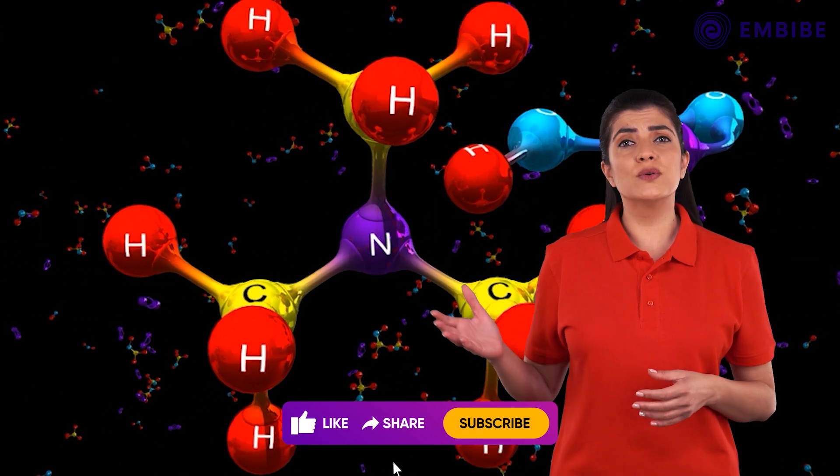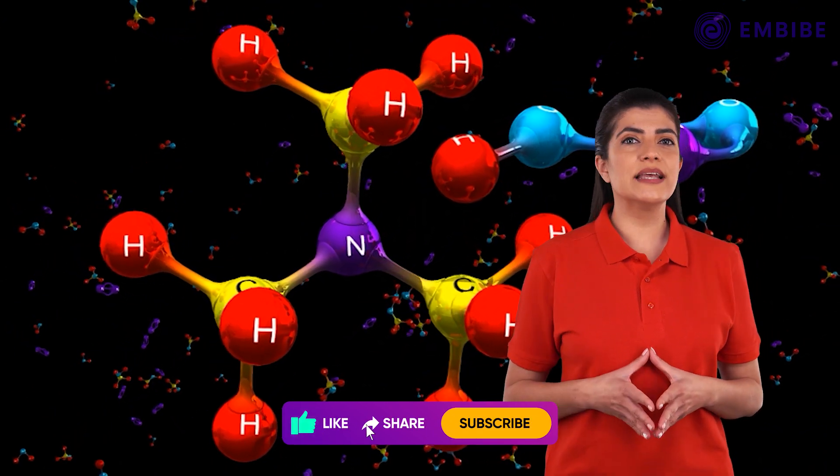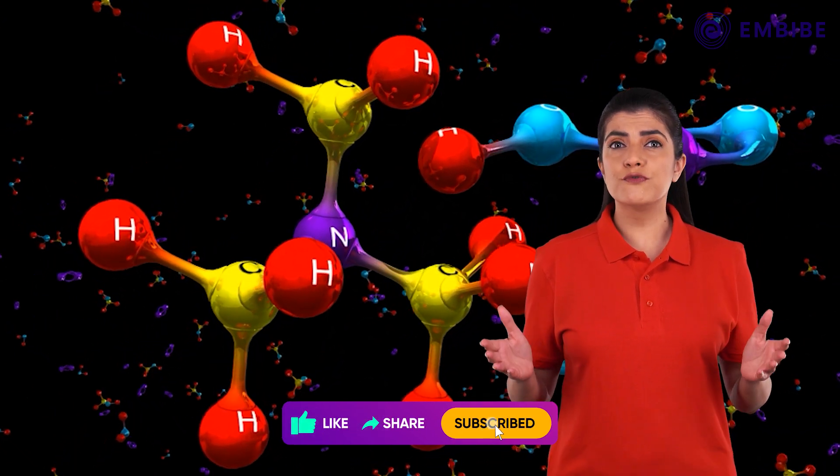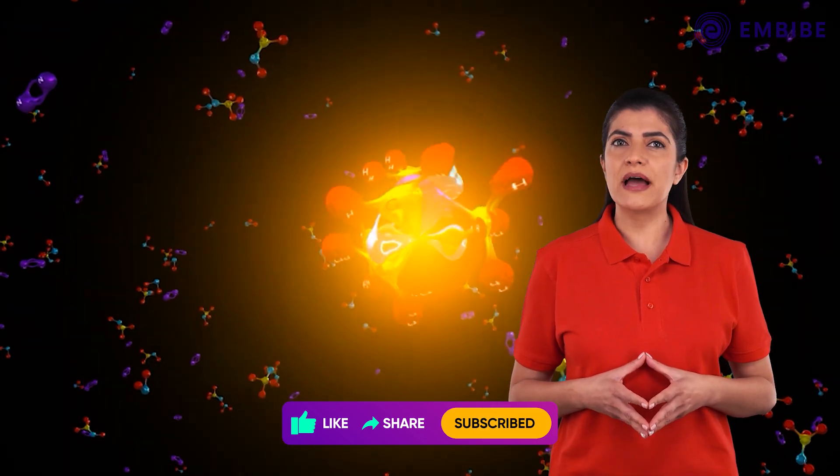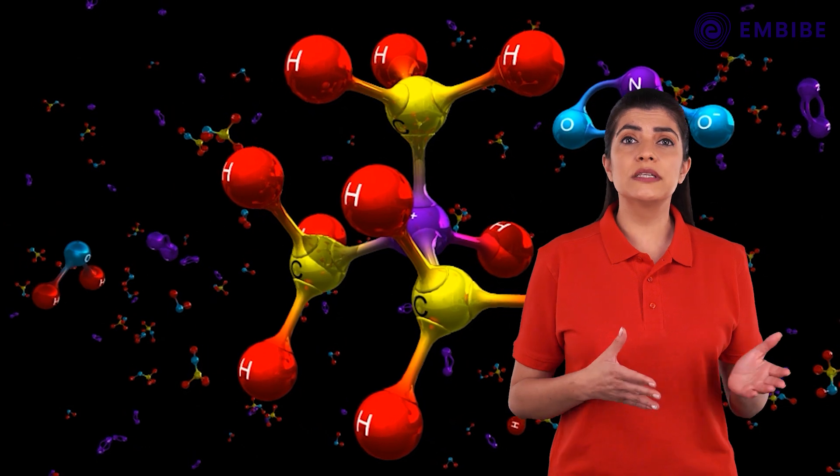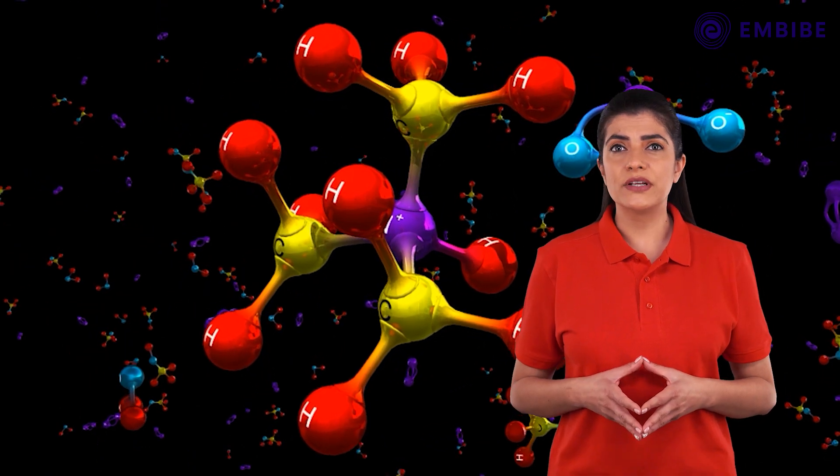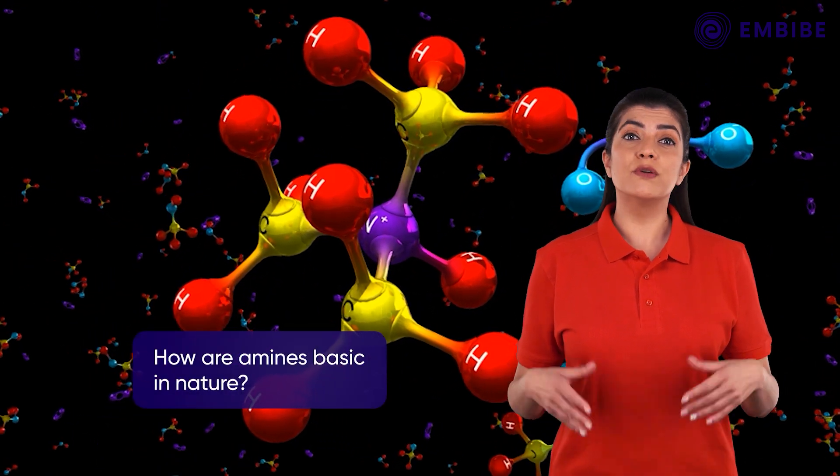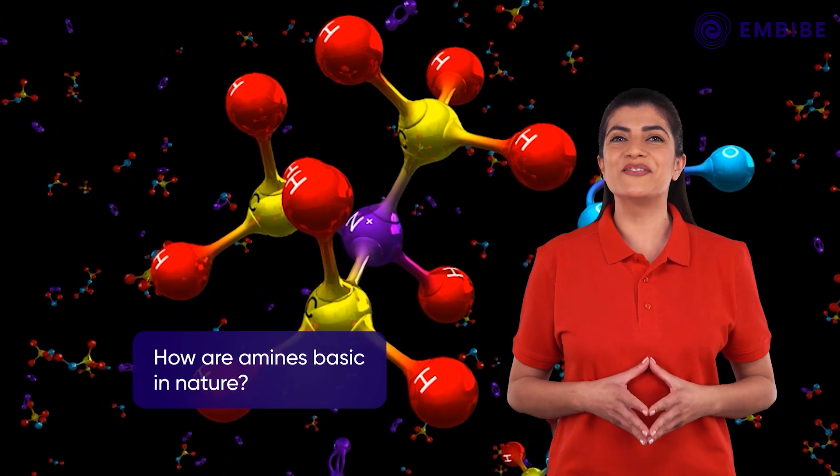Did you know that amines can donate a pair of electrons as well as accept a proton to form substituted ammonium ions? So amines are bases according to both Lewis and Bronsted-Lowry theories. But how are amines capable of doing these things? Come, let's find out.